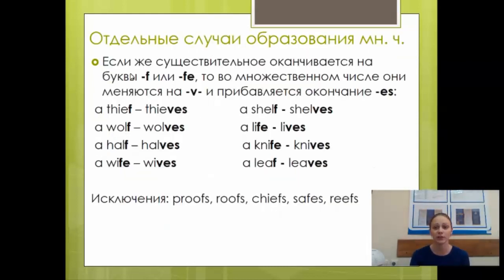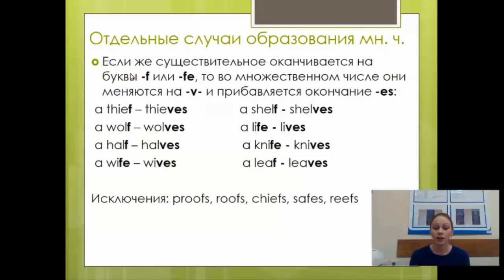Есть отдельные случаи образования множественного числа. Если существительное заканчивается на -f или -fe, во множественном числе они меняются на -v и добавляется -es: a thief — thieves, a wolf — wolves, a half — halves, a wife — wives, a shelf — shelves, a life — lives, a knife — knives, a leaf — leaves. Однако есть исключения, где -f не меняется на -v и добавляется только -s: roofs, chiefs, safes, reefs и другие.